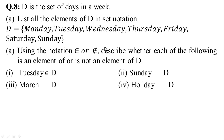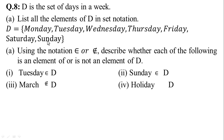Similarly, Sunday is also an element of D, so we use the element-of sign: Sunday belongs to D. March is not an element of D, so we use the not-element sign: March does not belong to D. Similarly, Holiday is not in set D, so Holiday does not belong to D.